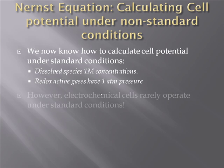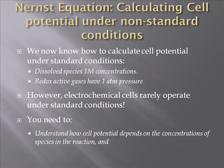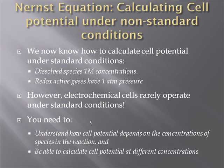We're going to use the Nernst equation to calculate potentials under non-standard conditions. It's very necessary — very rarely do electrochemical cells actually operate under standard conditions. We need to understand how cell potential depends upon concentrations of species in solution, and specifically be able to calculate or quantify cell potential at different concentrations.